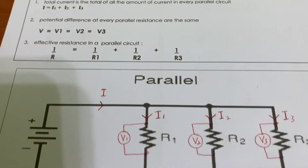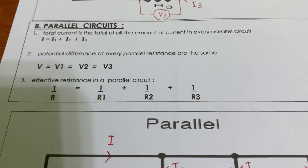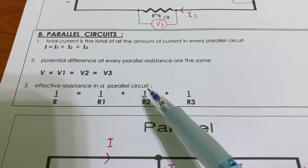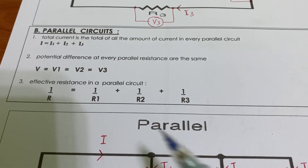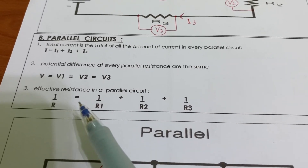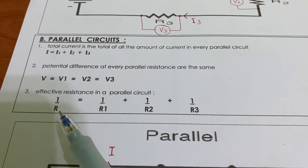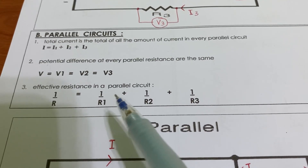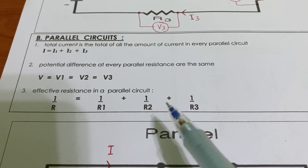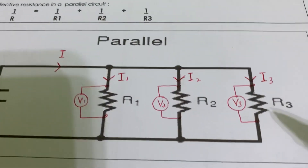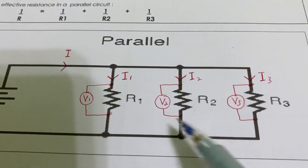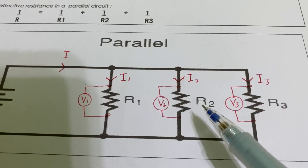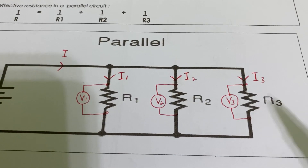The last part of the parallel circuit concept is the resistance calculation. The equation is: 1 over R equals 1 over R1 plus 1 over R2 plus 1 over R3, where R is the effective resistance.